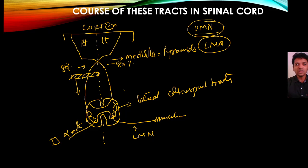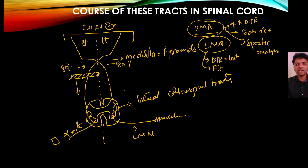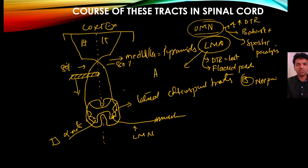Features of upper motor neuron paralysis below the lesion include exaggerated deep tendon reflexes, positive Babinski sign (extensor plantar reflex), and spastic paralysis. In contrast, lower motor neuron paralysis shows loss of deep tendon reflexes, flaccid paralysis, negative Babinski sign, and muscle atrophy.